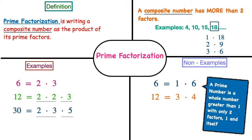Let's look at 12. I can write 12 as 3 times 4. True, 3 times 4 is 12, but that is not prime factorization — 3 is a prime factor but 4 is not. Now let's look at 30. I can write 30 as 5 times 6, but that's not the prime factorization of 30 either. 5 is a prime factor but 6 is not.